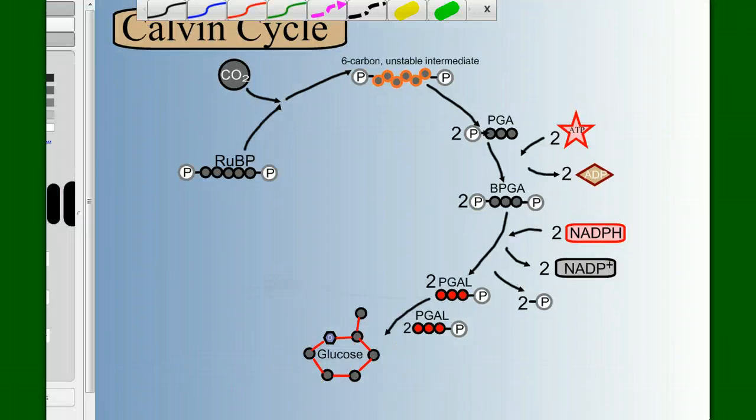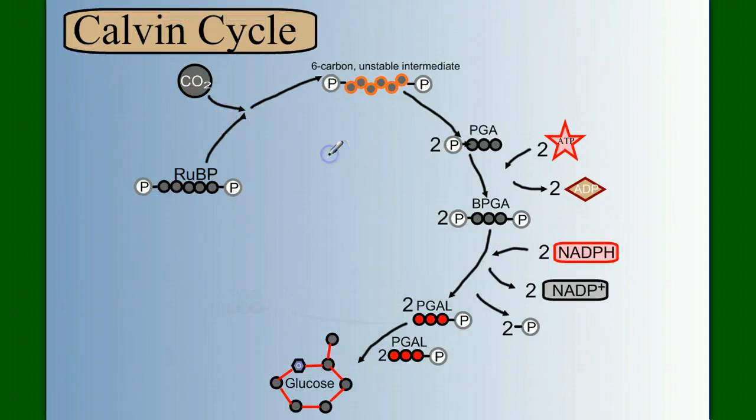So what we have is our six carbon dioxide, making six unstable intermediates, breaking down into 12 PGAs, being energized by 12 ATP, releasing 12 ADP. We make each one of these PGAs becomes a BPGA, or a biphosphoglycerate. We need 12 NADPHs. We're going to send back 12 NADPs and 12 phosphates. And each of these BPGAs becomes a PGAL. So we have 12 PGALs.